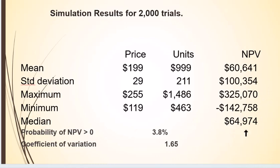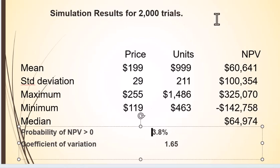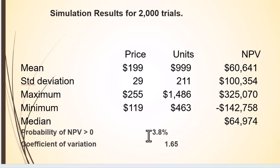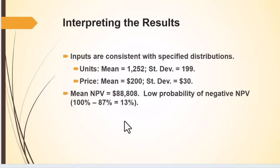The median net present value was around $64,000. They also provide additional statistics — what's the probability that net present value would be greater than zero? In this case we end up with 3.8%, which sounds low. There's also a pretty large minimum of negative $142, and the coefficient of variation is 1.65.